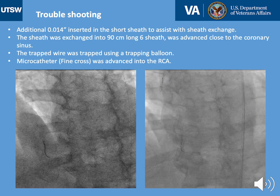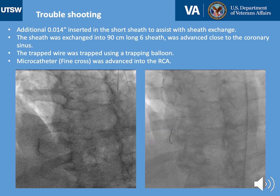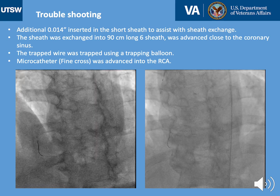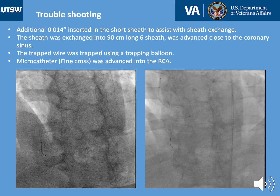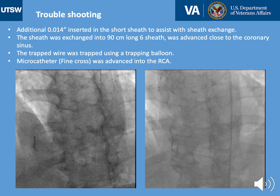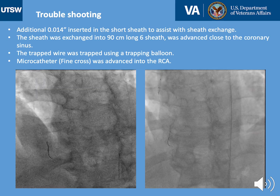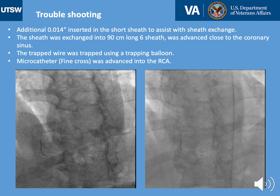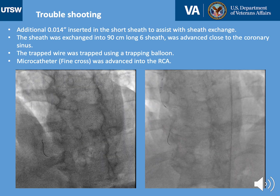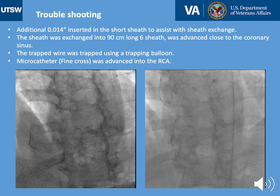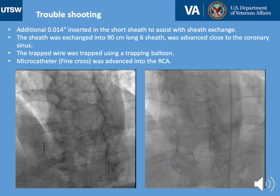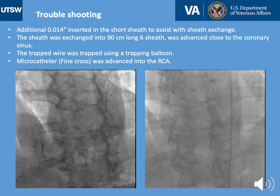We immediately realized this was an even bigger problem than initially thought. We paused for a few moments to think about our options before doing something that could potentially make things even worse. At this point we only had a regular 0.014 wire trapped in the coronary and the short sheath — the wire was not exchange length, just a regular 190 cm wire. We decided to place an additional 0.014 wire inside the sheath into the descending aorta, and used both wires to exchange the sheath for a long 90 cm 6 French sheath, advancing it as close as possible to the coronary ostium.